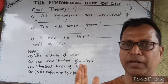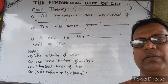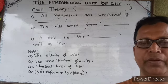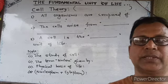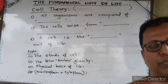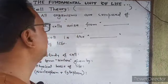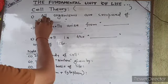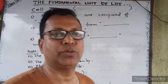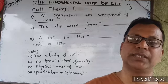Two scientists gave the cell theory, explained through the following points. First point: all organisms are composed of cells. For the entire organism, the body is made up of cells.